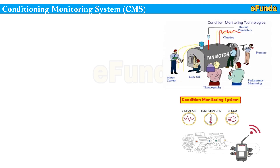Continuing on condition monitoring system — one can refer to the picture where condition monitoring technologies are shown. A fan motor is connected, where online parameters are being sensed: vibration measurement, motor current, oil level, thermography, performance monitoring, and pressure are being measured.